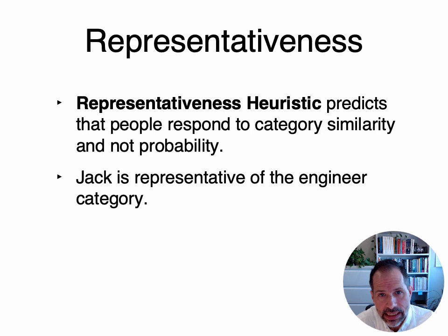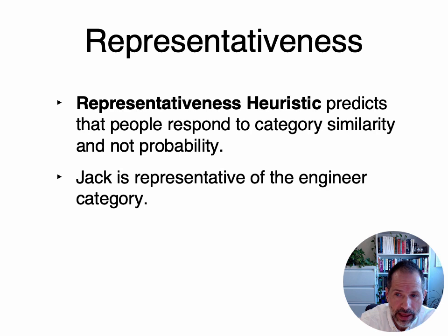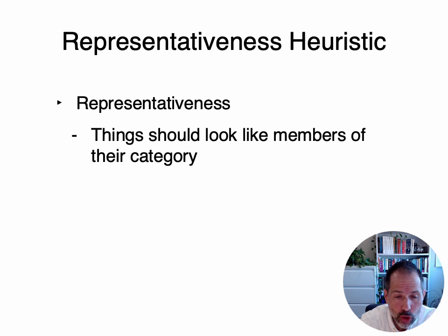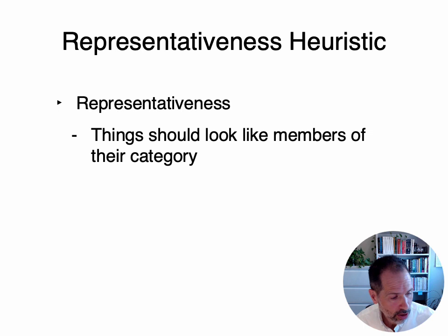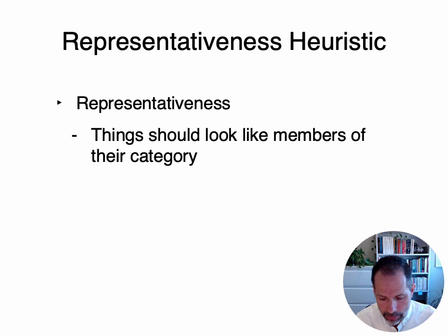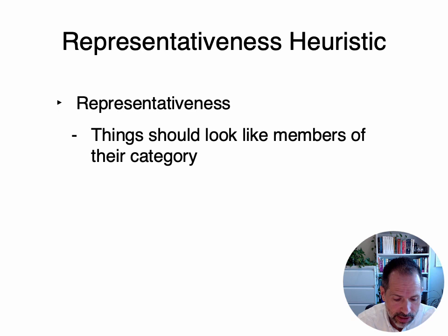Kahneman and Tversky called this the representativeness heuristic — it predicts that people respond to category similarity and not probability. Jack is just representative of the engineer category. They further suggested that representativeness means that things should look like members of their category. If you know someone is an engineer, a police officer, a professor, or a physician, you expect them to be representative of that category. Oftentimes they are, but we all have individual differences, so sometimes this can produce an error.